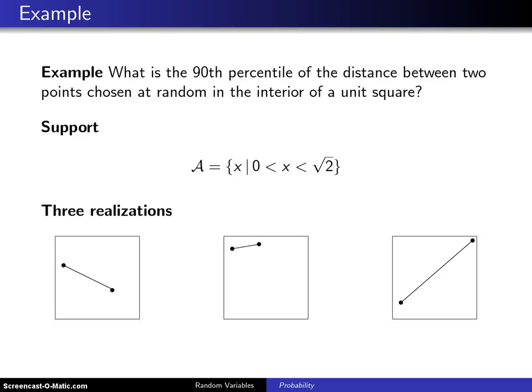Here is a second example of using Monte Carlo simulation. What is the 90th percentile of the distance between two points chosen at random in the interior of a unit square?